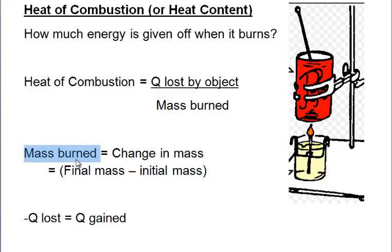So we just figure out how much actually burned. So the mass that burned is going to be equal to its change in mass. So how much did it weigh at the end? A little bit. Minus how much it weighed at the beginning, which is a lot. So the mass burned would be a negative number.